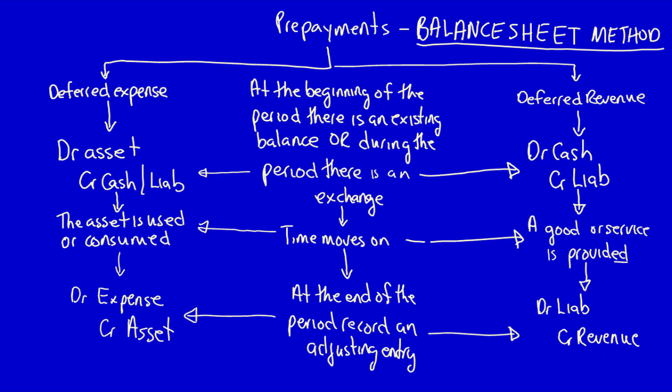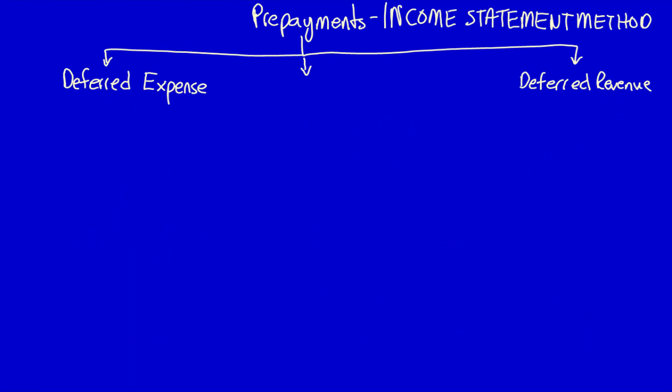How does this change if we're going to use the income statement method for prepayments? Let's create a brand new flowchart. For simplicity's sake I'm going to assume that there are no opening balances and there is only an exchange during the period — it just helps to introduce this concept in a very simple way. So let's start with the deferred expense.